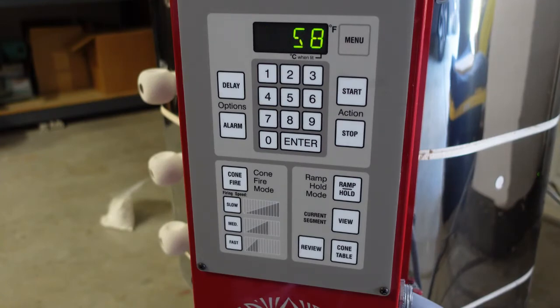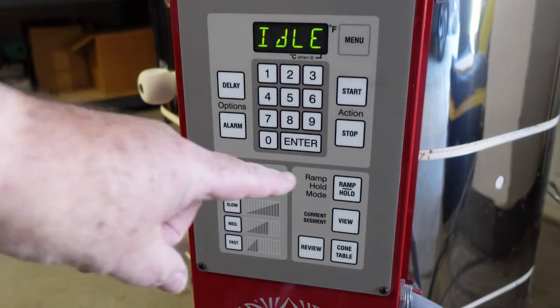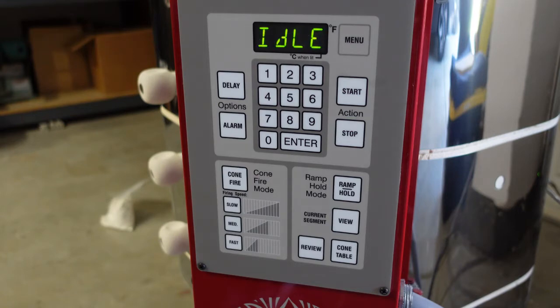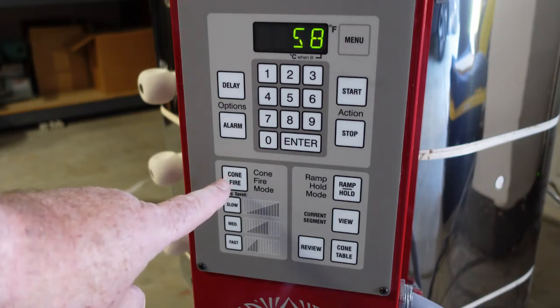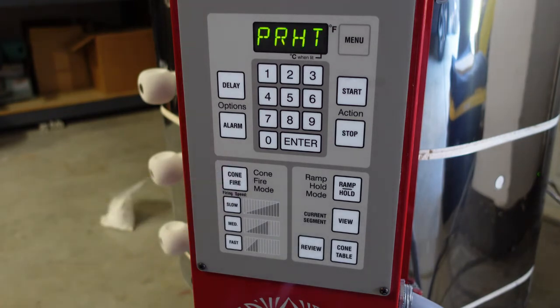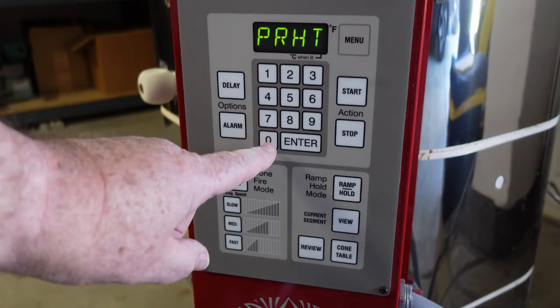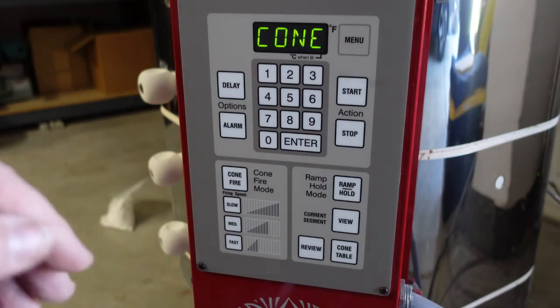Now I'm going to show you how easy it is to program. Again, we're going to be doing a disc firing, which is to cone 04. You have an option of using this ramp hold mode, which gives you a little more control over how fast or where you want your firing to go. But I'm just doing a straight bisque firing, so I'm going to tell my kiln that I want to do a cone fire. It says do I want to preheat, and I don't, so I'm just gonna say enter here because it had zeros on there. Zero preheat.